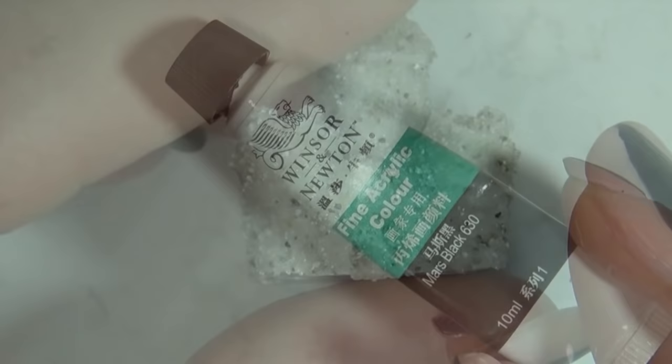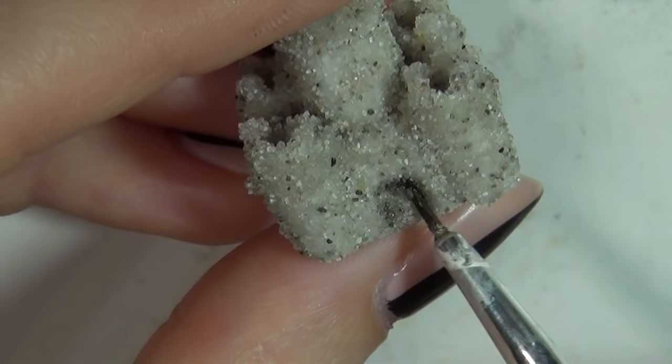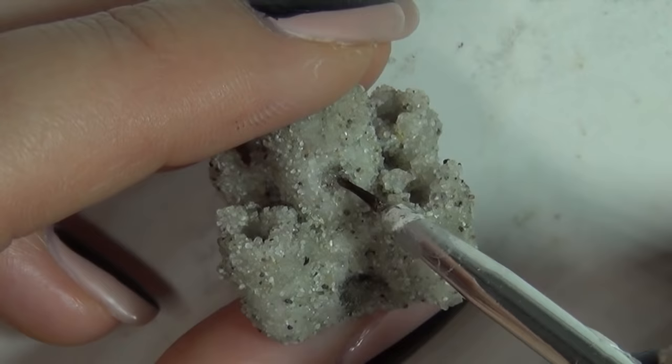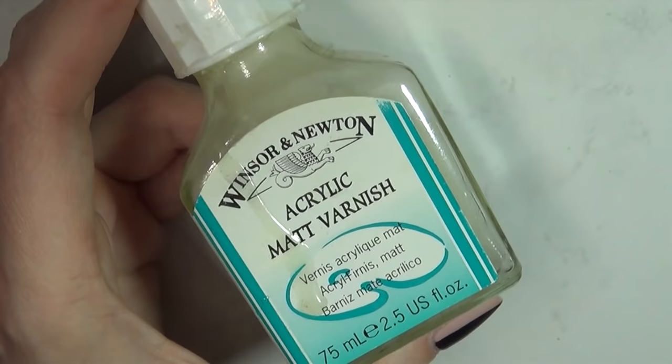As a final touch, I went in with some watered down black acrylic paint and a fine brush and defined the door a little bit. Finally, I added some matte glaze to seal it in.